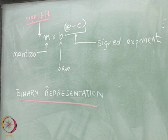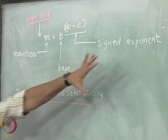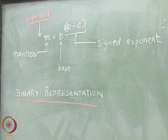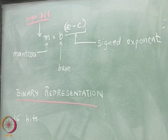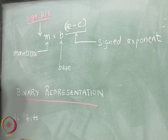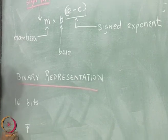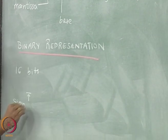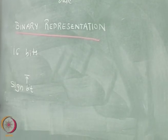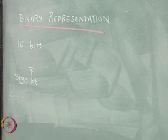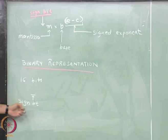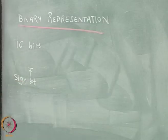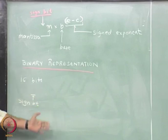How would a binary representation of a floating point number look? Let us say that we will have a total of 16 bits for representing a real number. In that particular case, the first bit is going to be the sign bit that will represent the sign of the complete real number. Whether the real number is positive or negative will be given by the value of the sign bit: 0 would mean it is a positive number, 1 would mean it is a negative number.